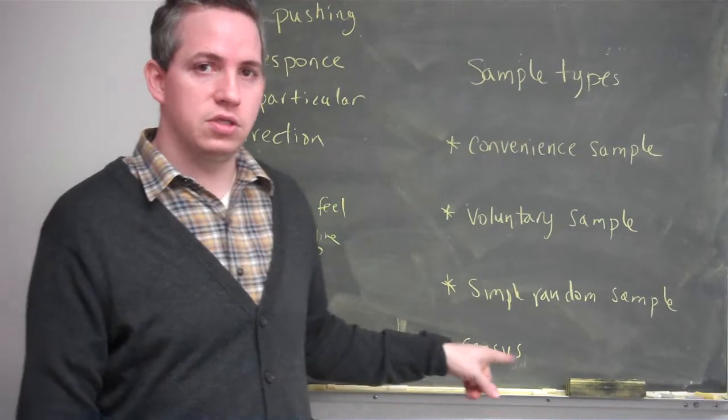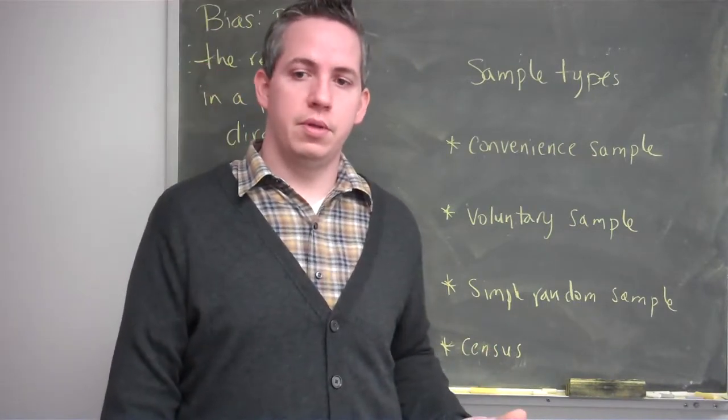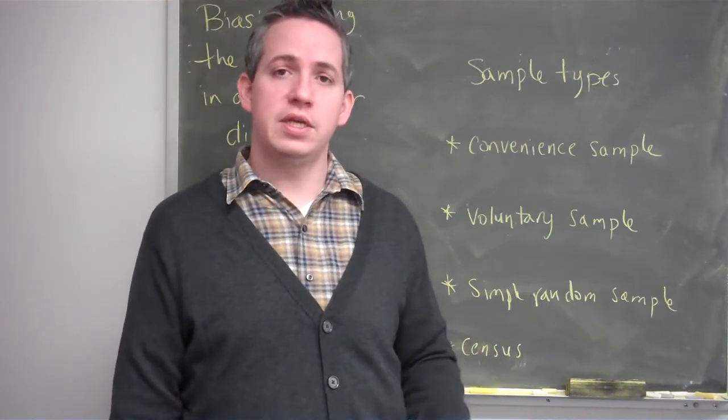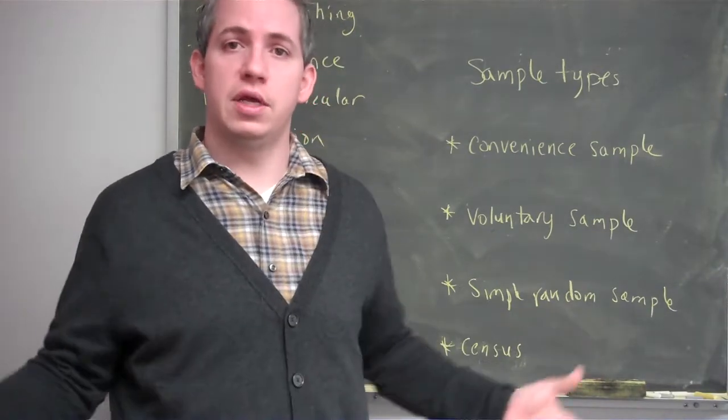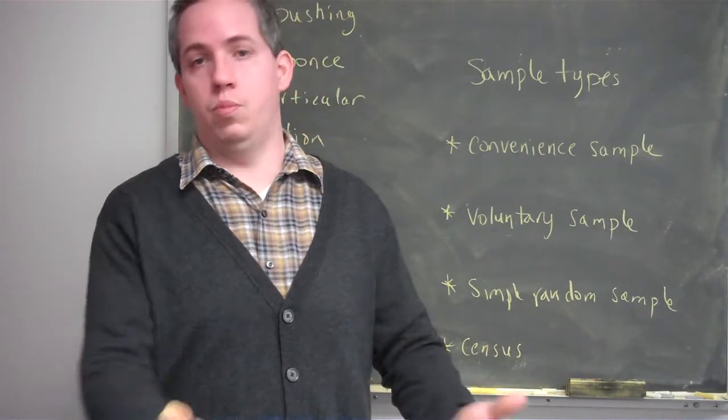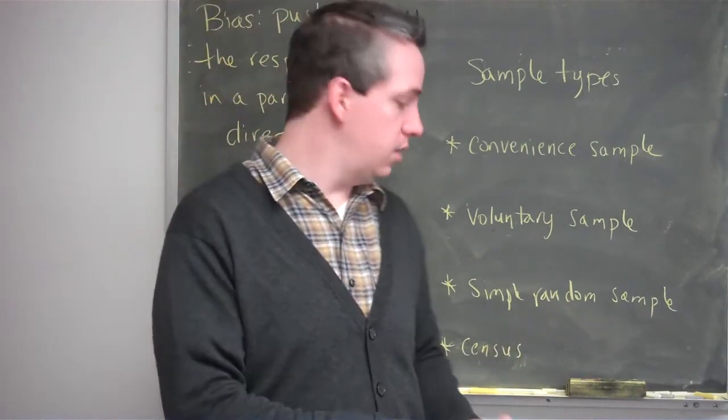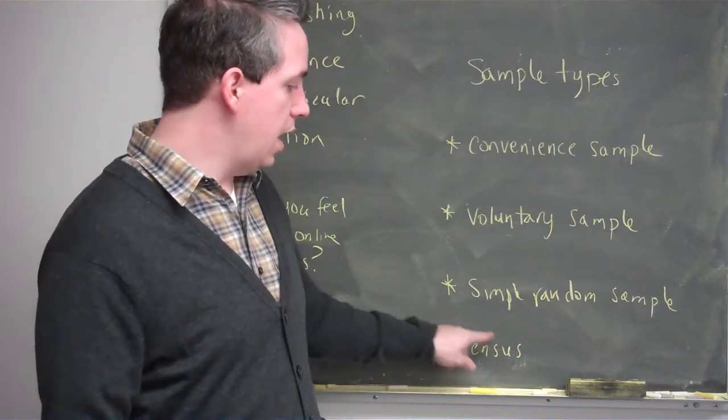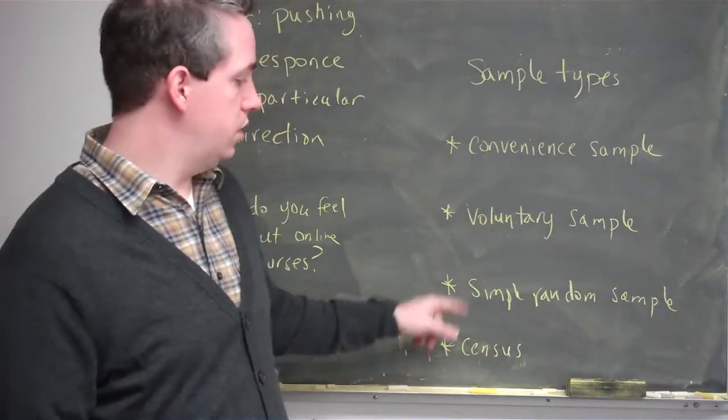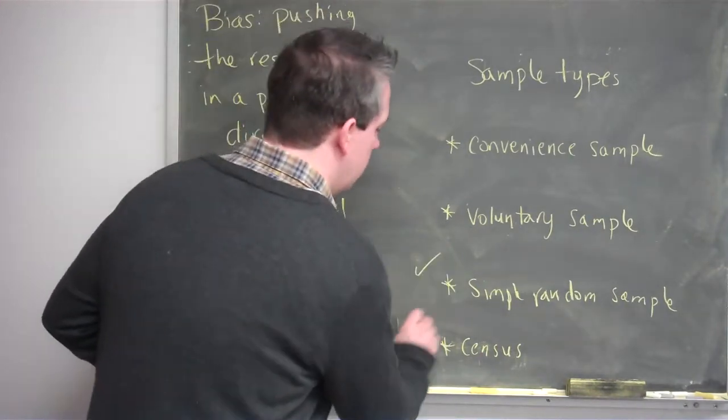A census is when we ask every single person in the population. For instance, the United States Census—we go out and ask every single U.S. citizen about where they live, how much money they make, and stuff like that. A census is not going to have bias either.